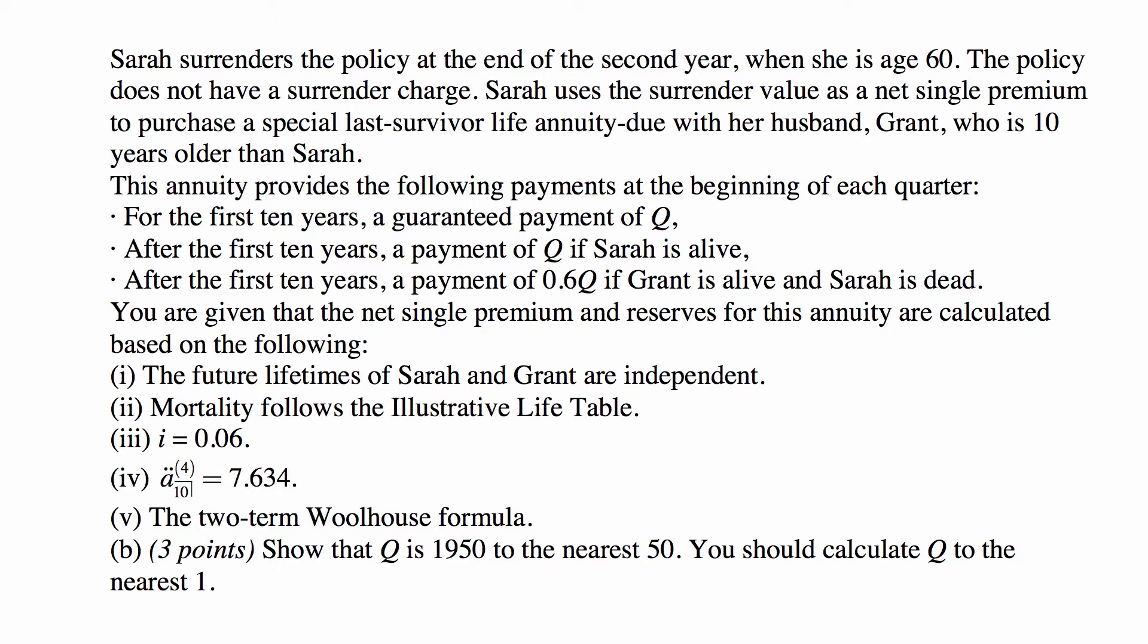You are given that the net single premium and reserves for this annuity are calculated based on the following: The future lifetimes of Sarah and Grant are independent. Mortality follows the illustrative life table. The interest rate is 6%. A double dot angle 10 upper 4 is 7.634. The two-term Woolhouse formula. Part B asks you to show that Q is 1950 to the nearest 50. You should calculate Q to the nearest 1.